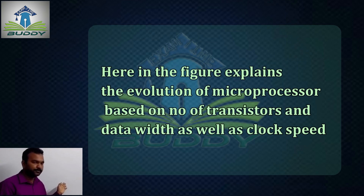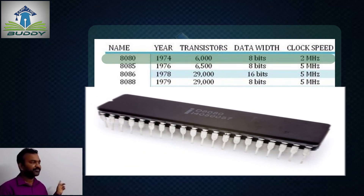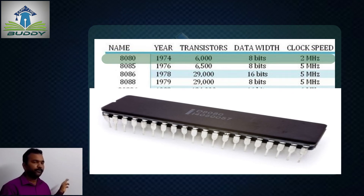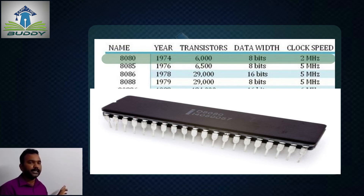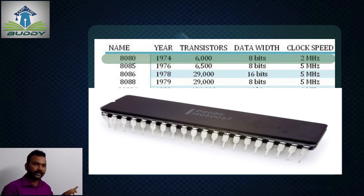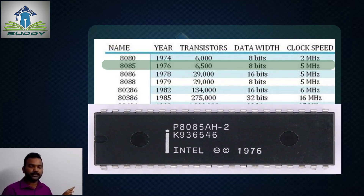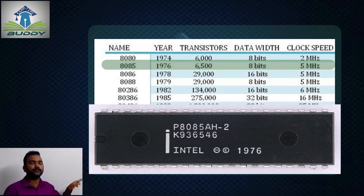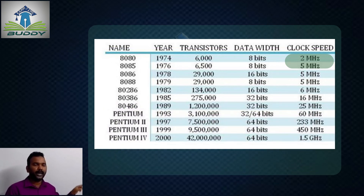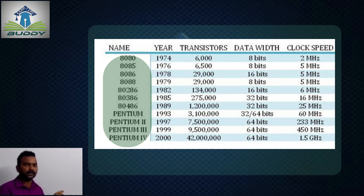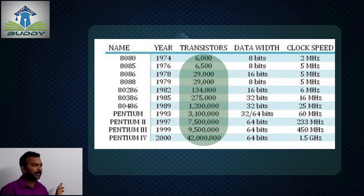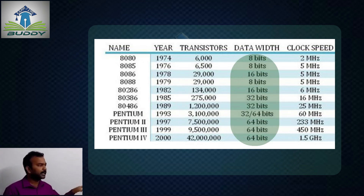In the figure we can observe the different sets of microprocessors in the table. The first one is the 8080, introduced in 1974, having 6000 transistors, a data width of 8 bits, and a clock speed of 2 MHz. The classification is based on number of transistors, data width, and working speed. Next is the 8085, introduced in 1976, with a data width of 8 bits and a clock speed of 5 MHz — an improvement from 2 MHz to 5 MHz compared to the 8080. As technology improved, the number of transistors, data width, and clock frequency all improved.